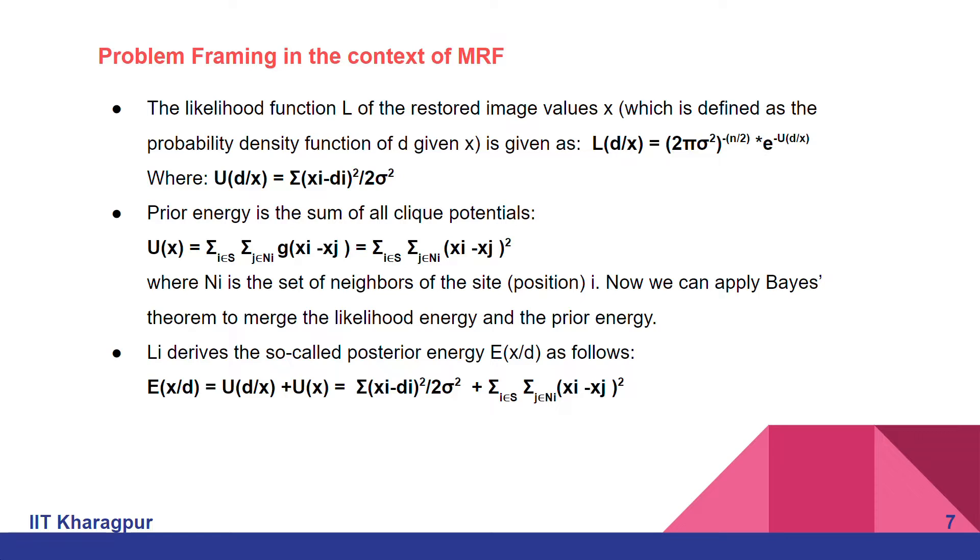It is given as 2 sigma square power minus n by 2 into e power minus U of D by X, where U of D by X can be thought of as the difference of the original image to the noisy image.